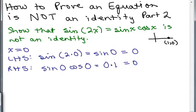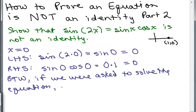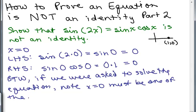Have I proved this is not an identity? No, I haven't. When I plugged in 0, I got the same number on both sides. This does not show that it is an identity, but we just haven't found the right number for x yet. In fact, x equals 0 must be one of the solutions to this equation. But just because it has one solution doesn't mean it's an identity, so we have to try a different value for x.